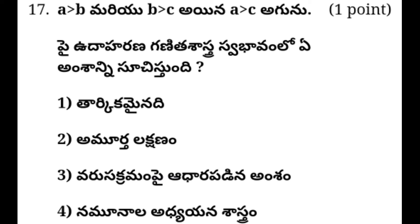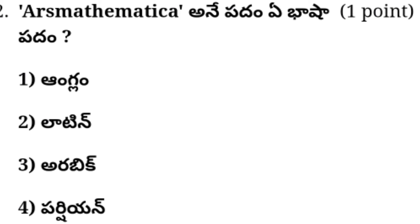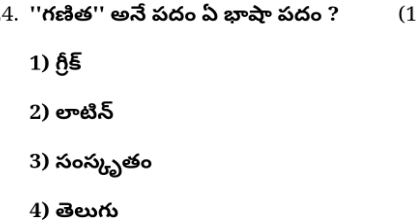A greater than B, B greater than C, A greater than C — option 1. Next one: Ars Mathematica. Option 2: Arabic. Option 4. Answer is option 2: Latin. Ars Mathematica. Option 1, option 2, option 4. Answer in comment box. The answer is option 3 — 10 sums.